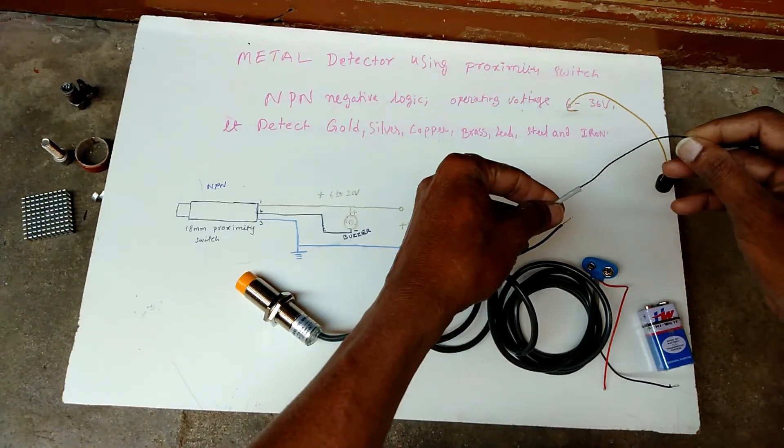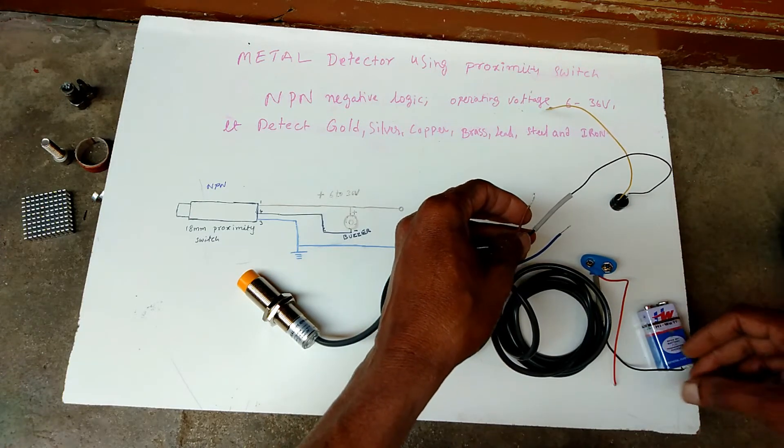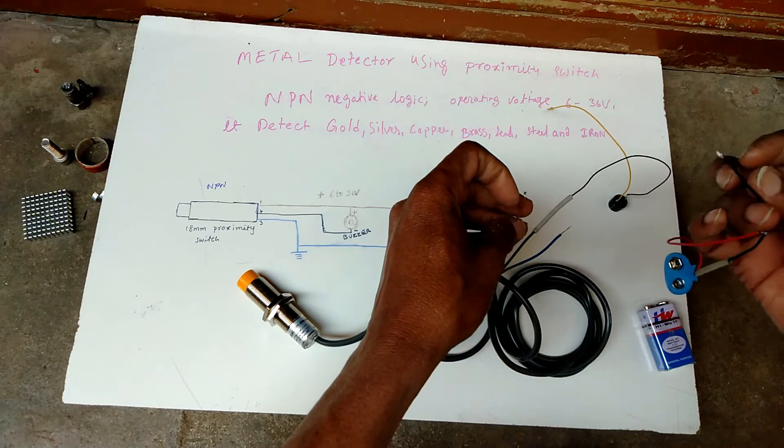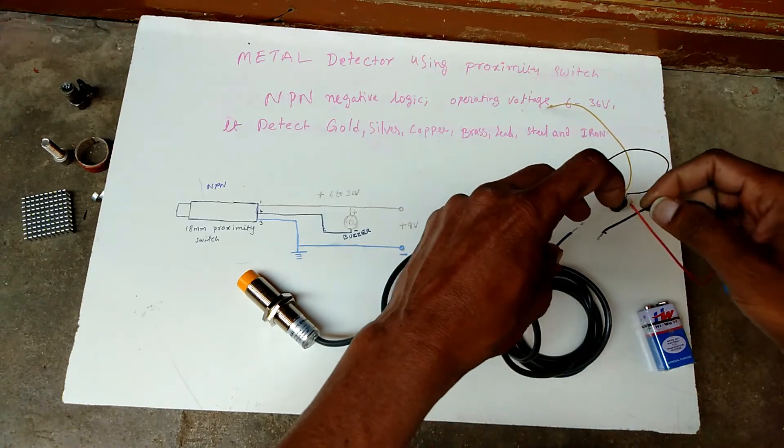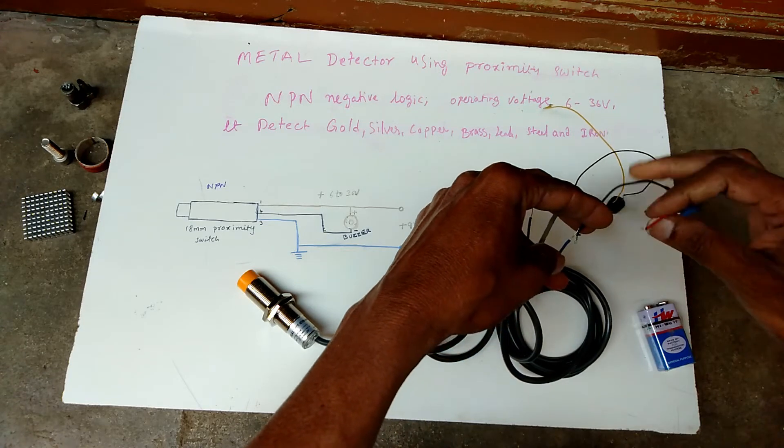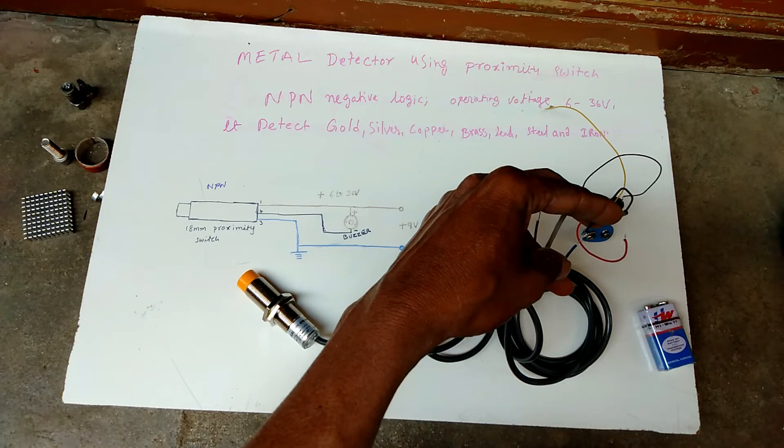Next we have to connect this blue wire, this one blue wire. This one blue wire is batteries negative, we have to connect battery negative.